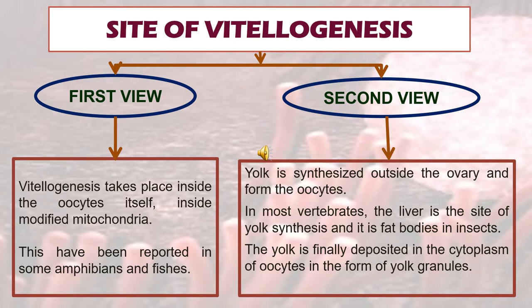The first view is that vitalogenesis takes place inside the oocyte itself, inside modified mitochondria. This has been reported in some amphibians and fishes. The second view is that yolk is synthesized outside the ovary and transported to the oocyte. In most vertebrates, the liver is the site of yolk synthesis, and it is fat bodies in insects. The yolk is finally deposited in the cytoplasm of the oocyte in the form of yolk granules.